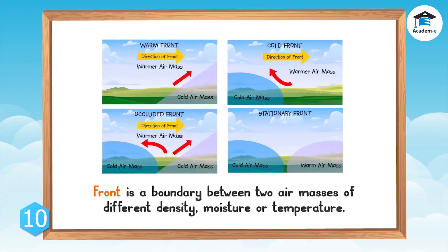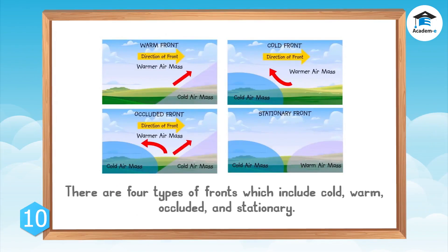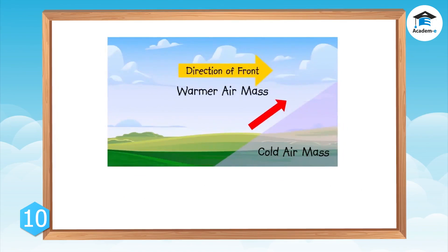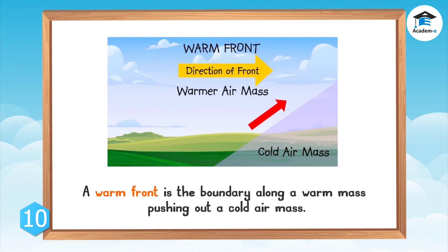A front is a boundary between two air masses of different density, moisture, or temperature. There are four types of fronts: cold, warm, occluded, and stationary. A warm front is the boundary along which a warm air mass pushes out a cold air mass. Warm fronts often bring stormy weather as the warm air mass rises above the cool air mass, making clouds and storms. When the front passes, the sky becomes clear and temperature rises as warm air replaces cold air.